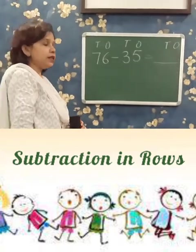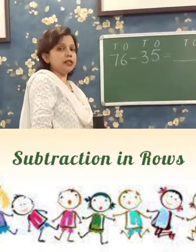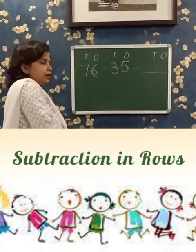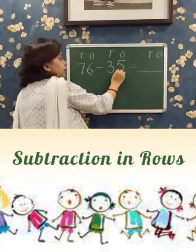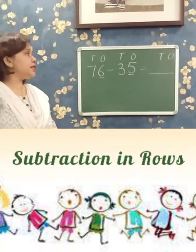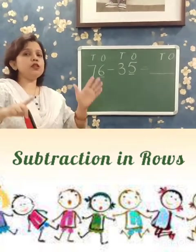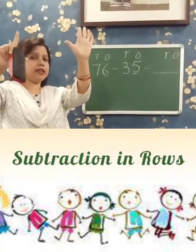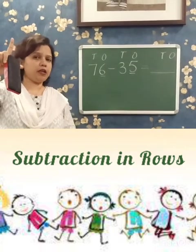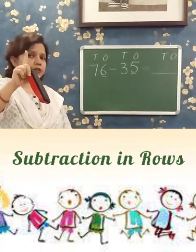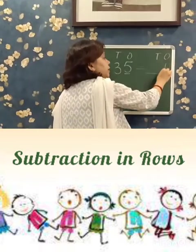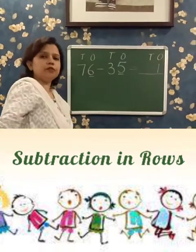First subtract the 1's. 1's it is 6, 1's it is 5. 6 minus 5 — take out 6 and from that you take away 5. How many are left? 1. So write 1 in the place of 1's.